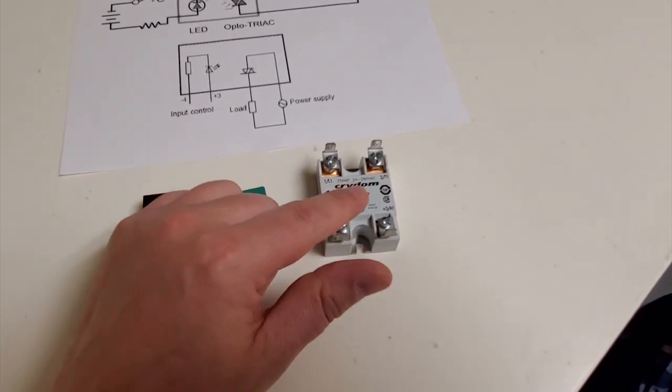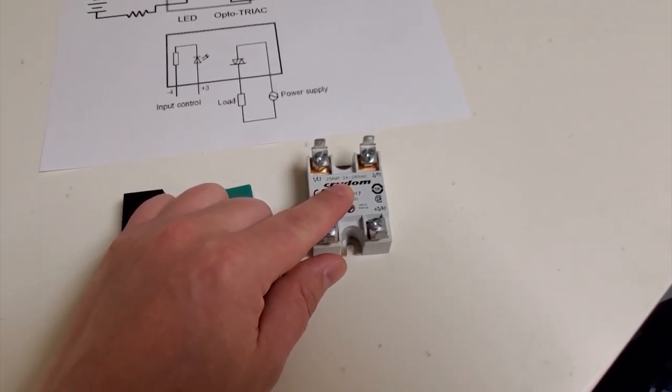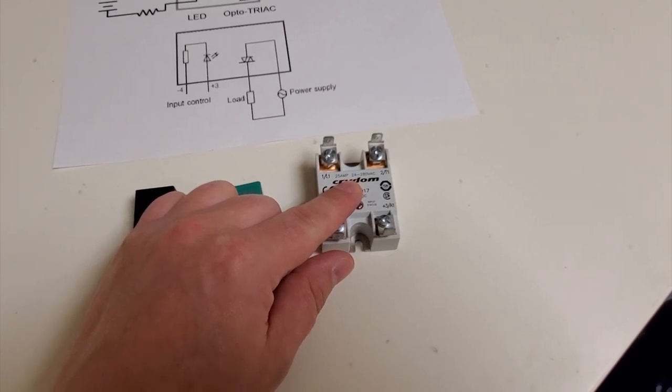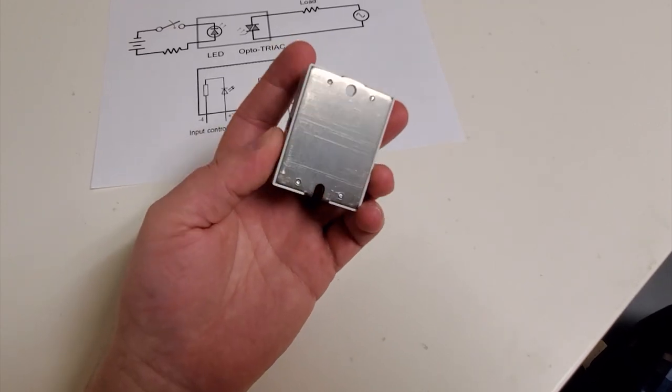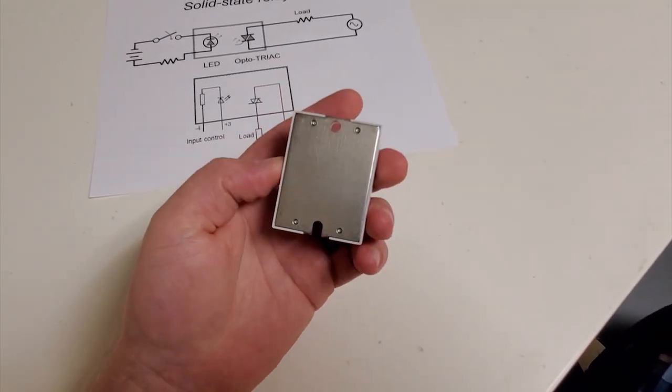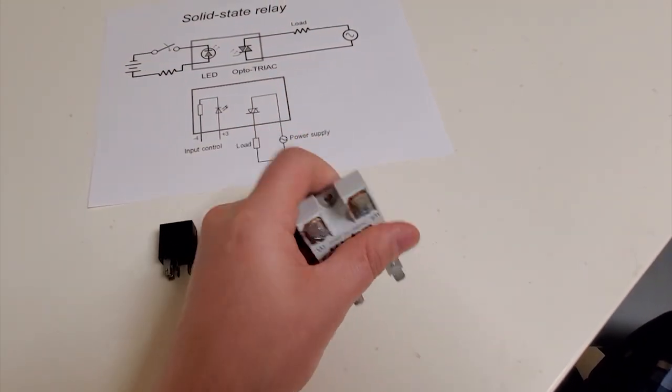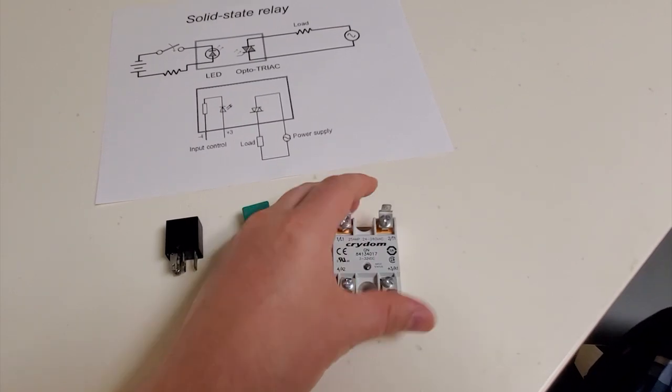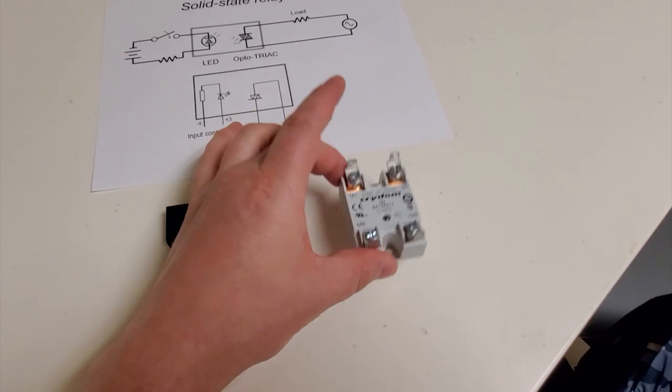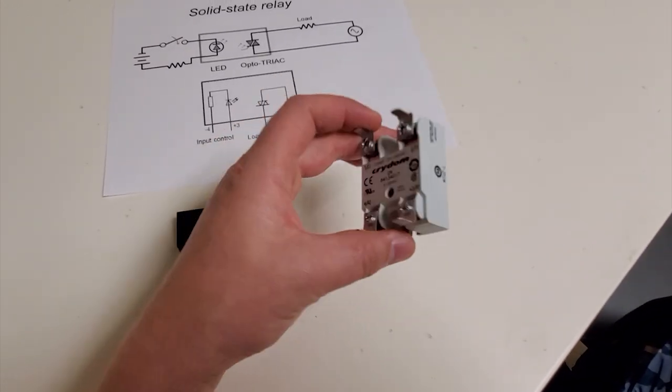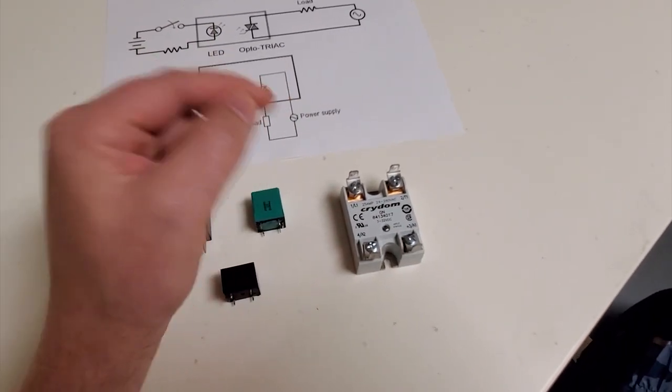So next thing I want to talk to you guys about is the current rating. You can see up here, this guy is rated for an amazing 24 amps at 280 volts. That is its rating when it is properly hooked up to a heat sink. If you take a look at the back, this guy is metal. But this guy is not a proper heat sink. It's probably rated between 5 and 8 amps if this guy is floating in the air, not fastened to a surface, and not on a heat sink.